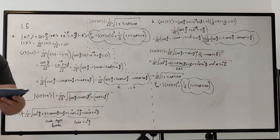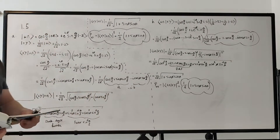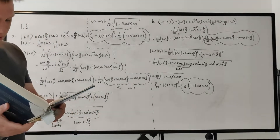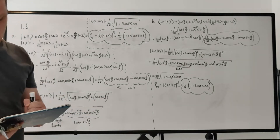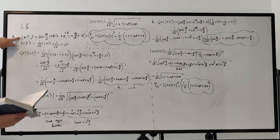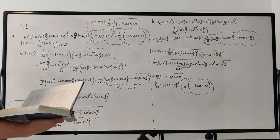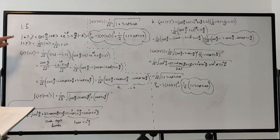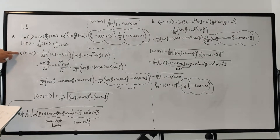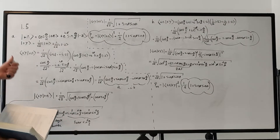Hello everyone, welcome to problem 1.5 of John Townsend's A Modern Approach to Quantum Mechanics. This problem wants us to find the amplitude of a particle that is in state |+n⟩ with a spin component of y equal to ℏ/2. Essentially, given that our particle state is |+n⟩, what is the amplitude of finding it in the state |+y⟩? Once we find the amplitude, it wants us to find the probability — that's part A.